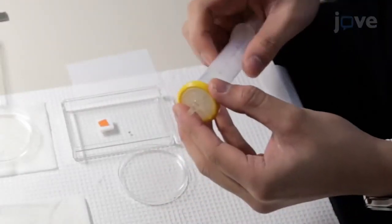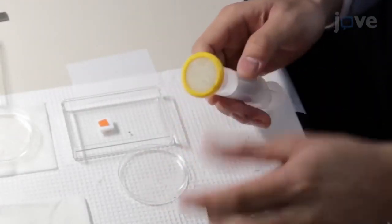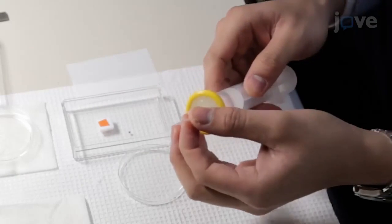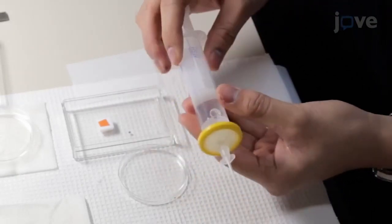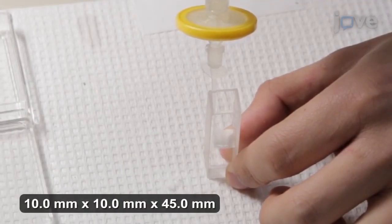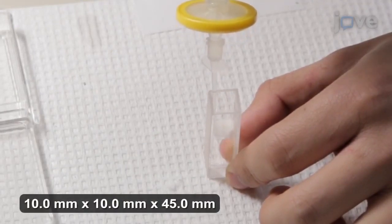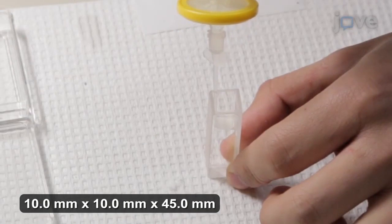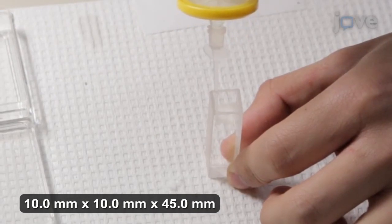Equip a water-filled syringe with a 0.22 µm syringe filter and a plastic dispensing needle. Carefully fill a glass cell with an optical path length of 10 mm and a height of 45 mm with filtered water, being careful to avoid the formation of air bubbles.